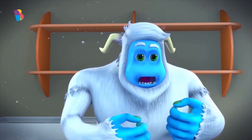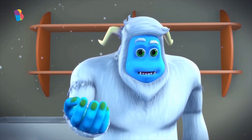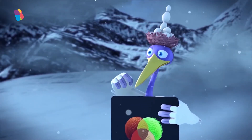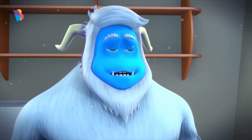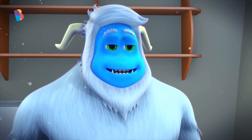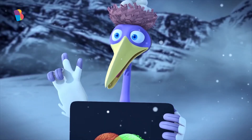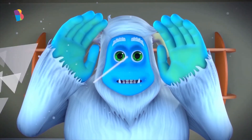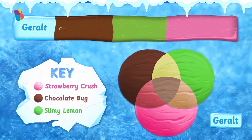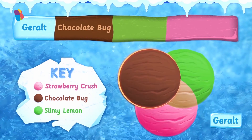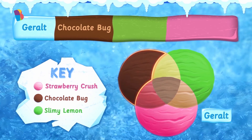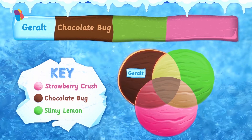Okay, so how do I use this to decide ice creams for your friends? This will not only help you decide ice cream flavors for my friends, but also help you sell ice creams that people want. Okay, listen to me. I am all in. My friend Geralt only likes chocolate bug ice cream. If Geralt only wants chocolate bug, where should I put him? It's easy. Only chocolate bug means Geralt goes into the part of the circle which is only brown in color.